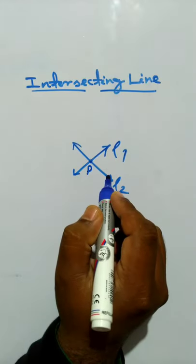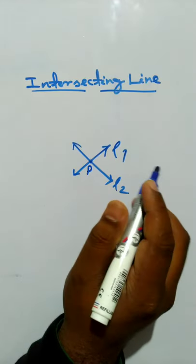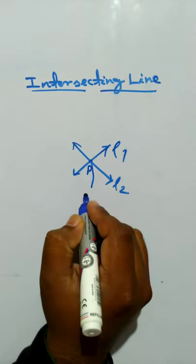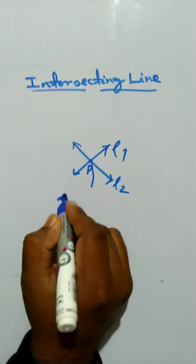If two lines have one common point, they are called intersecting lines. This point is called the intersecting point.